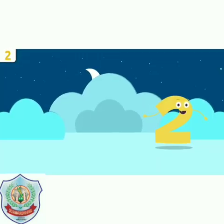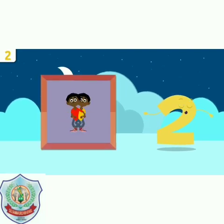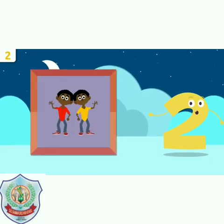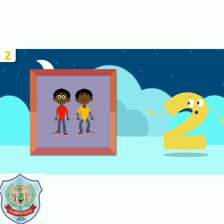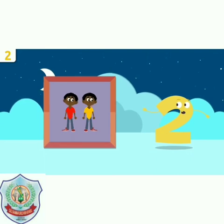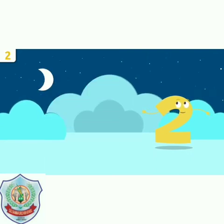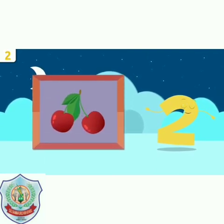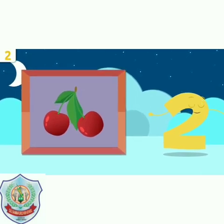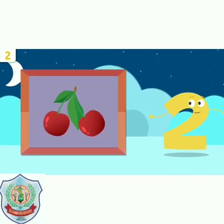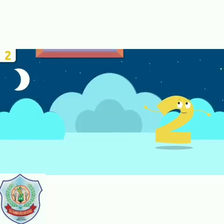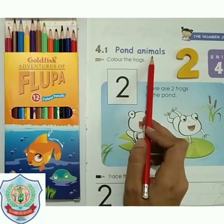Now I'll give you some examples. Look at those twins — they're identical. How many children are there? One and two. There are two. These cherries look so yummy. How many are there? Let's see — one and two. There are two cherries. Let's move to the page.